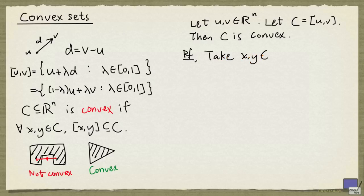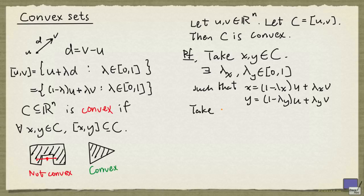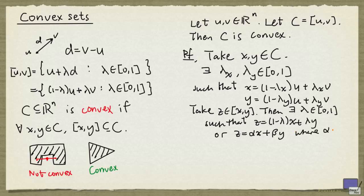So take any pair of x and y in C. Because x and y are on the line segment between U and V, there exist lambda_x and lambda_y from the interval [0,1] such that x equals (1 minus lambda_x) times U plus lambda_x times V, and y equals (1 minus lambda_y) times U plus lambda_y times V. Now take z on the line segment between x and y; then there exists lambda in the interval [0,1] such that z equals (1 minus lambda) times x plus lambda times y. We're going to write z as alpha times x plus beta times y, where alpha and beta are non-negative and alpha plus beta equals 1. This is clearly equivalent, and will make our algebra a little simpler.